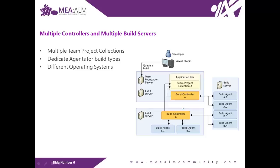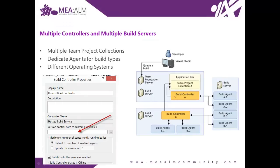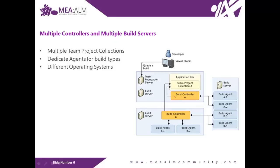There's another scenario where you may need multiple controllers. Let's say you have external assemblies you want to use — libraries from custom controls — that you want to reference in your team build. The build controller lets you assign a directory path in your code repository. If you have multiple folders and want to use one folder per build, since you can only assign one path per build controller, you can have multiple build controllers and assign a different path to each one.